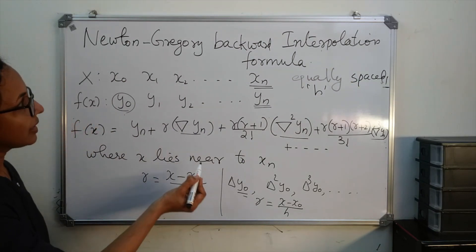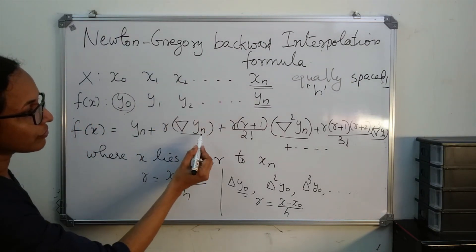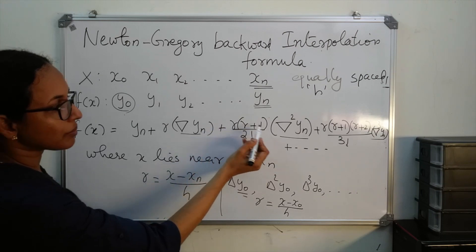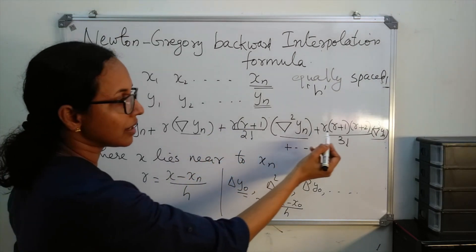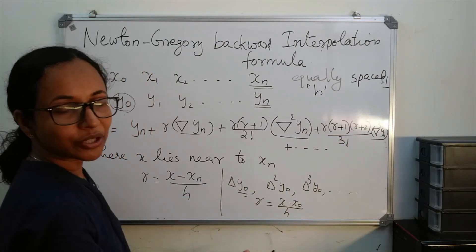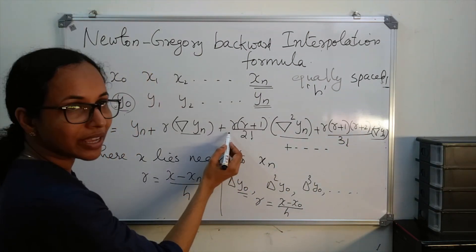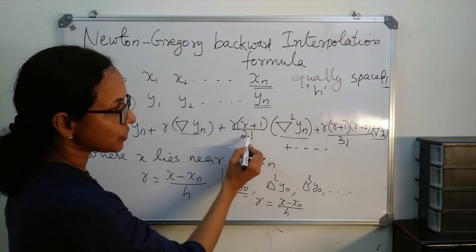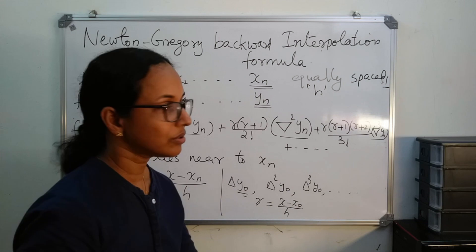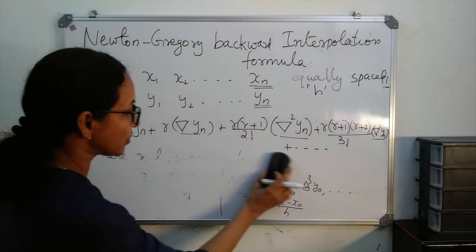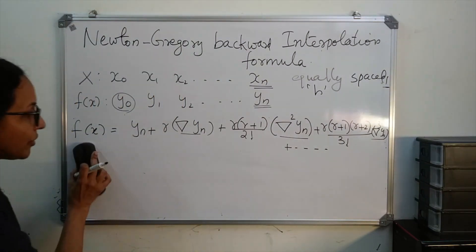In the forward interpolation formula, the terms involved r(r-1)/2!, r(r-1)(r-2)/3!, etc. But in the backward case, we have r(r+1)/2!, r(r+1)(r+2)/3!, etc.